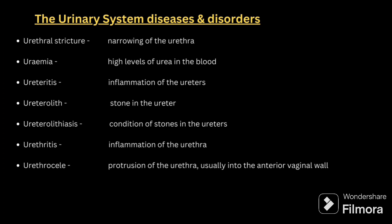Further conditions include: urethral stricture — narrowing of the urethra; uremia — high level of urea in the blood; ureteritis — inflammation of the ureter; urolithiasis — stone in the ureter; urethritis — inflammation of the urethra; and urethrocele — protrusion of the urethra into the anterior vaginal wall. That covers the urinary system, including anatomy, urine formation, functions, the structural unit of the kidney, and disease conditions.